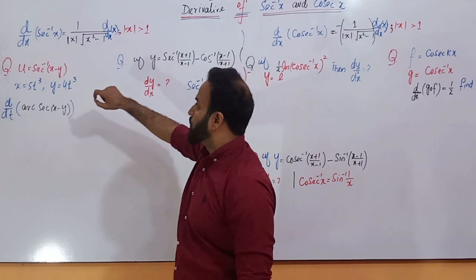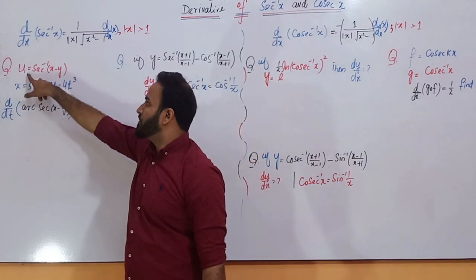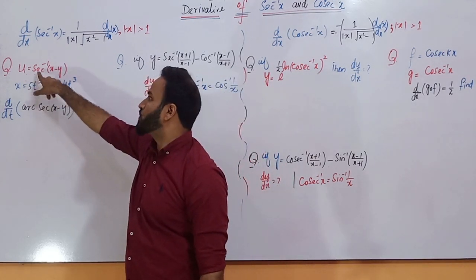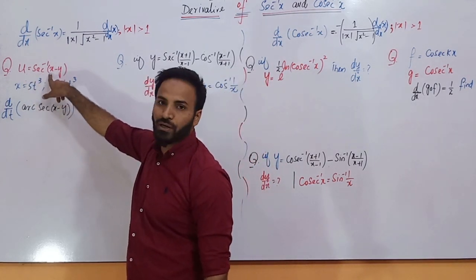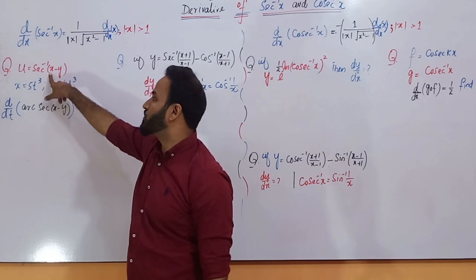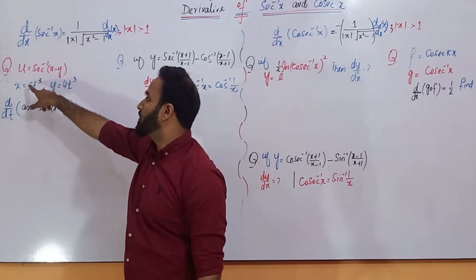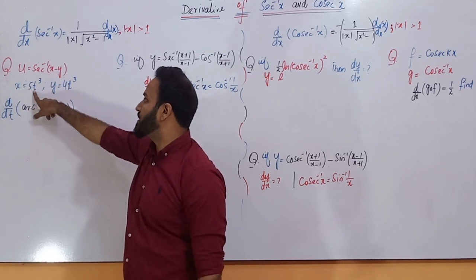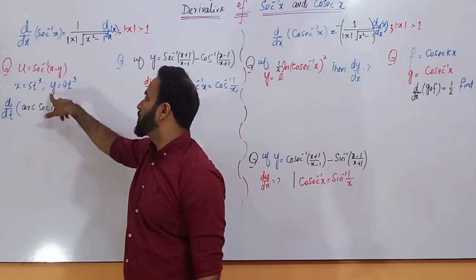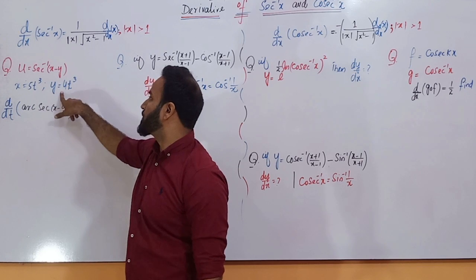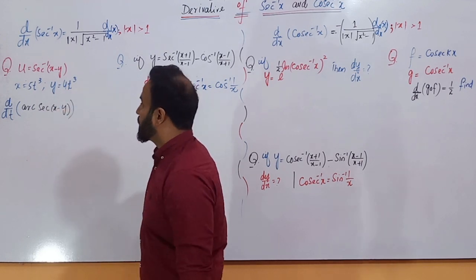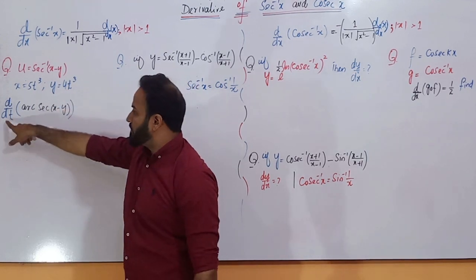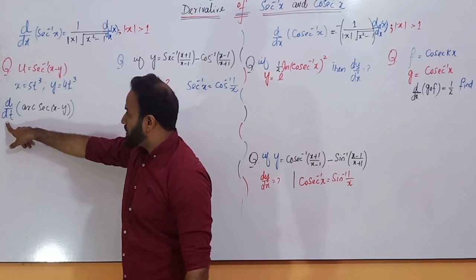What is the derivative of the function u which is equal to secant inverse of x minus y, where x is 5t cubed and y is equal to 4t cubed? I want to find out the derivative with respect to t.